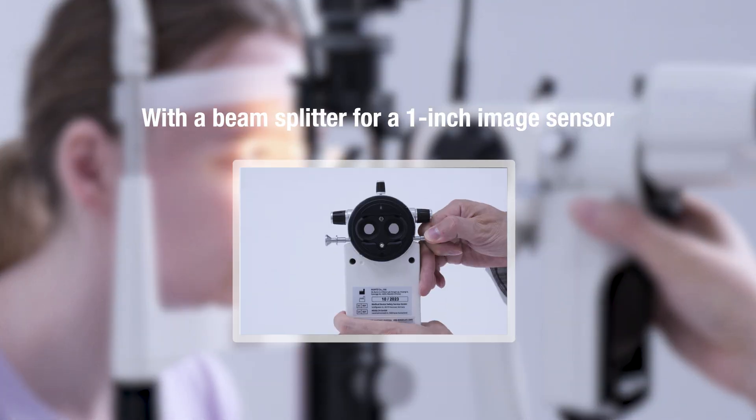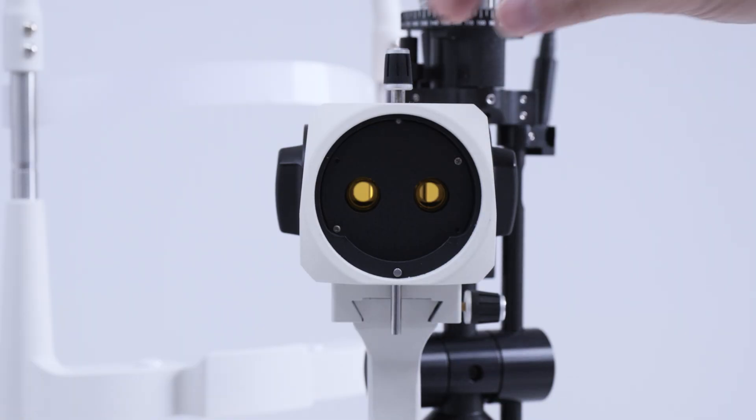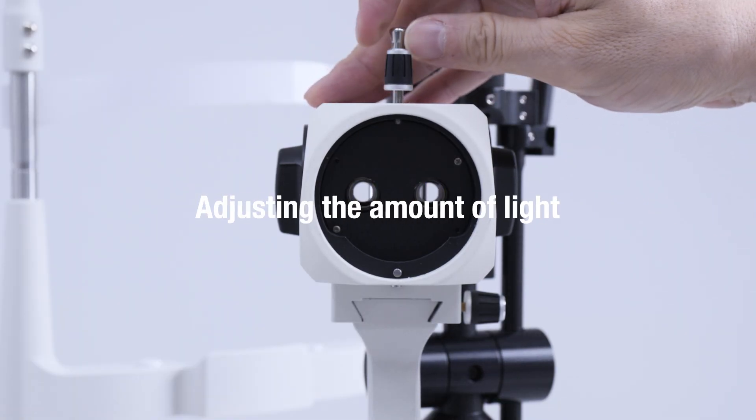By adjusting the amount of light with a beam splitter for a 1 inch image sensor, you can see more brightly with your eyes.